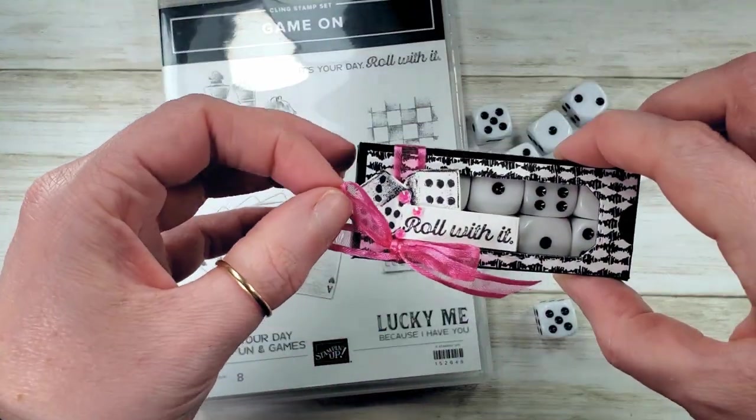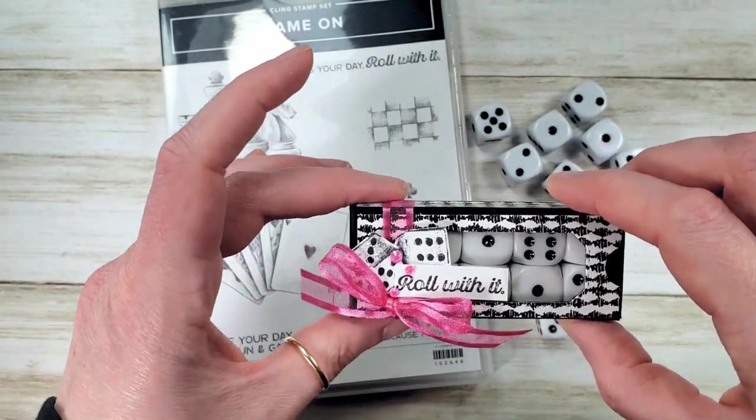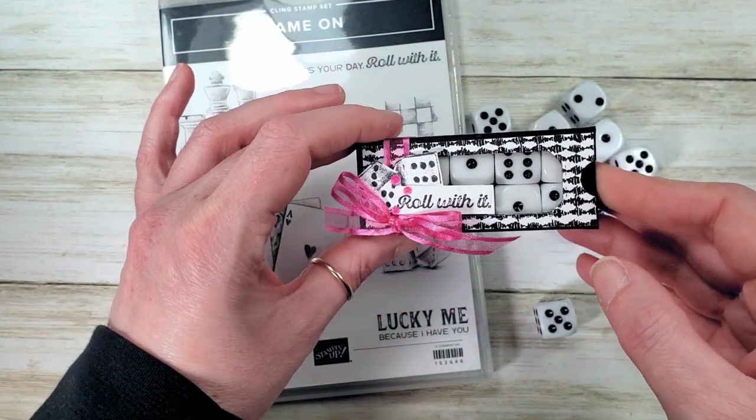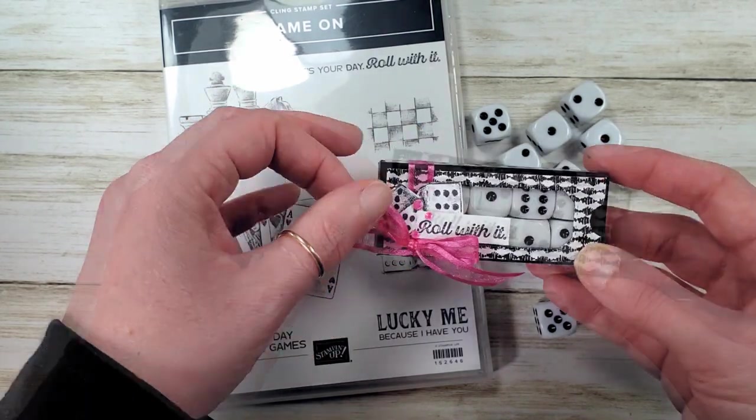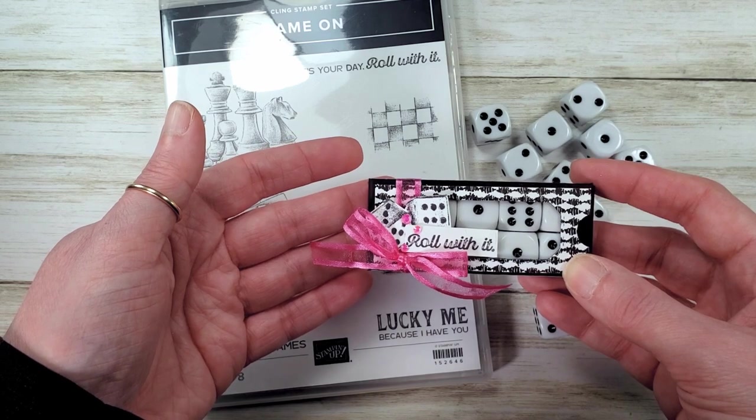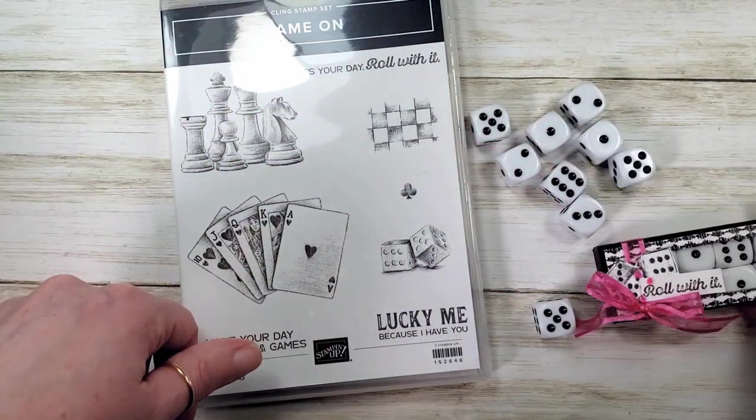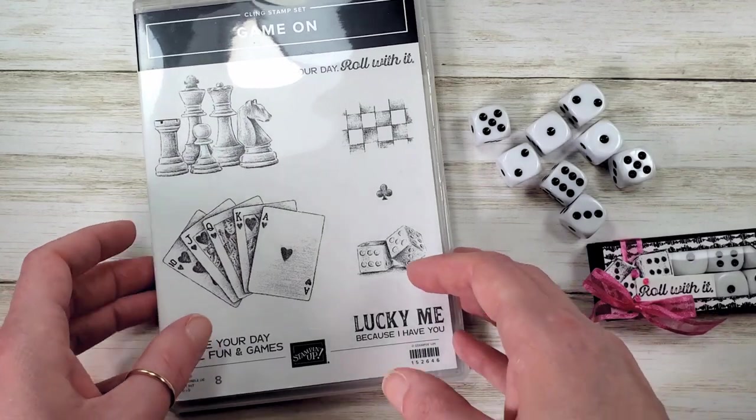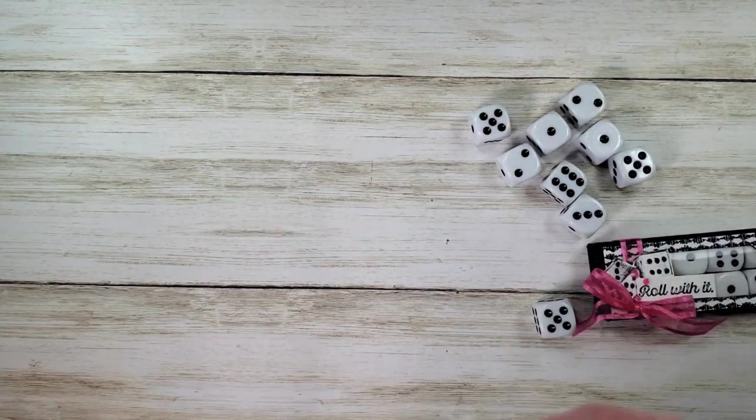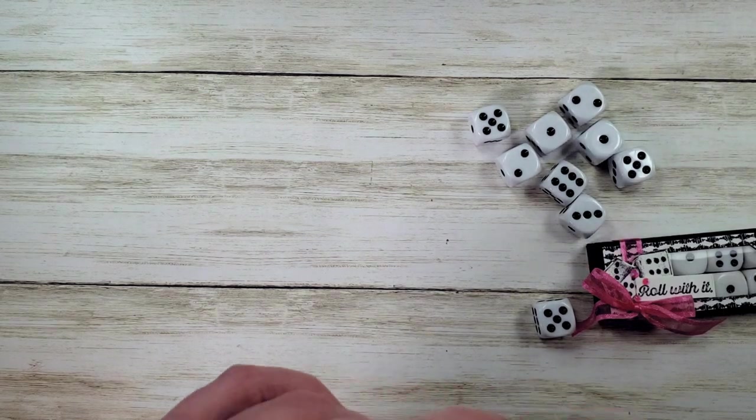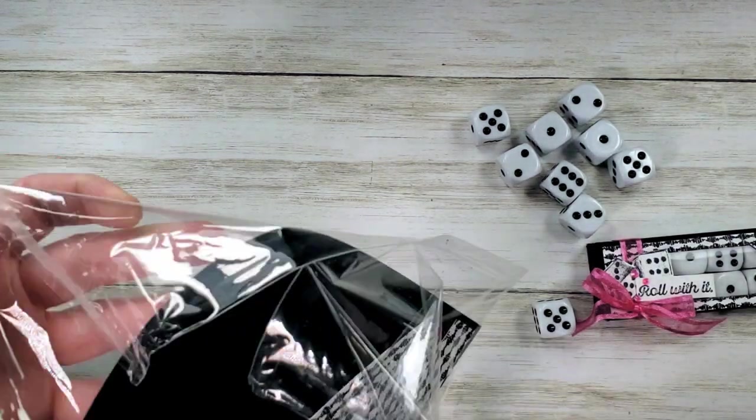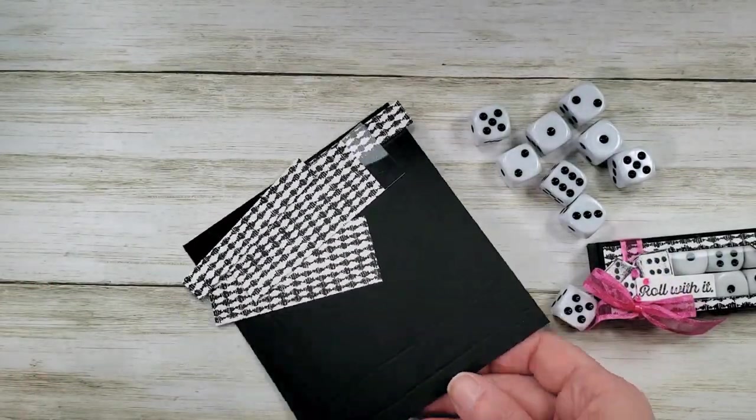The sentiment says roll with it. Wouldn't that be fun for your friends who like to play games or maybe somebody who's struggling a little bit? Just some fun encouragement to roll with it for those gamers in your life. It's just a cute little box. Let's do it. So the Game On stamp set is available while supplies last, but we are saying goodbye. We're going to say hello to a couple of things in this video. We're going to look at some of the new in-colors and some new designer series paper.